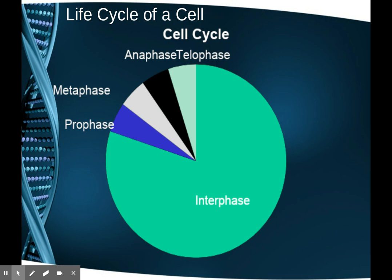This lesson focuses on the stages of cell multiplication or cell division. As you can see in this pie chart, the overwhelming amount of time in a cell's life is in a phase called interphase. Then we have to recognize the four stages of mitosis, which are the smaller wedges: prophase, metaphase, anaphase, and telophase.